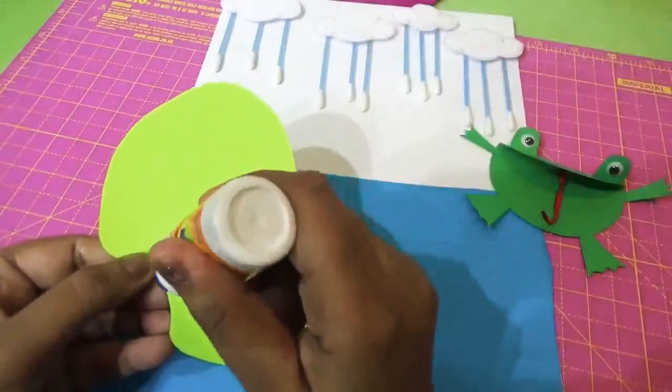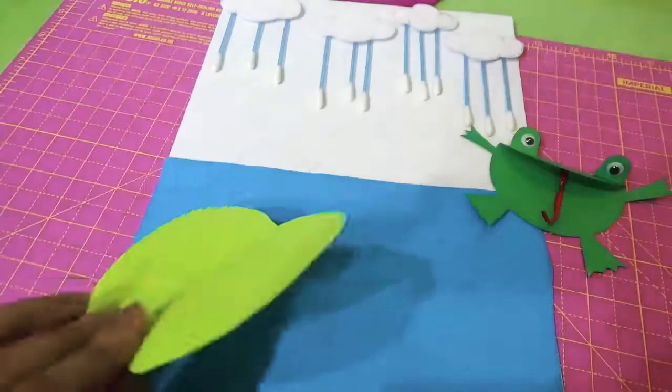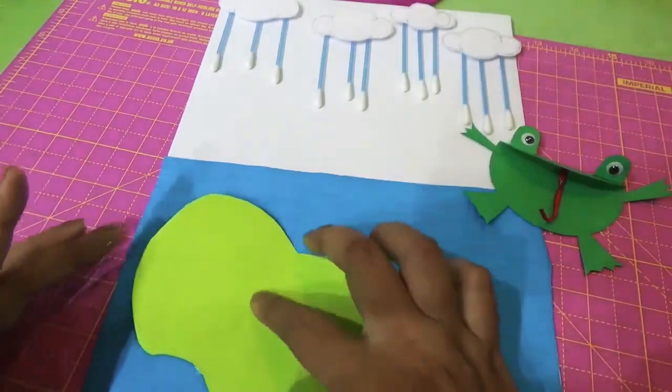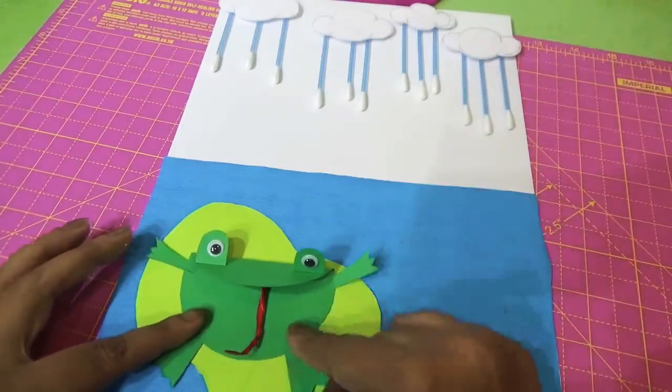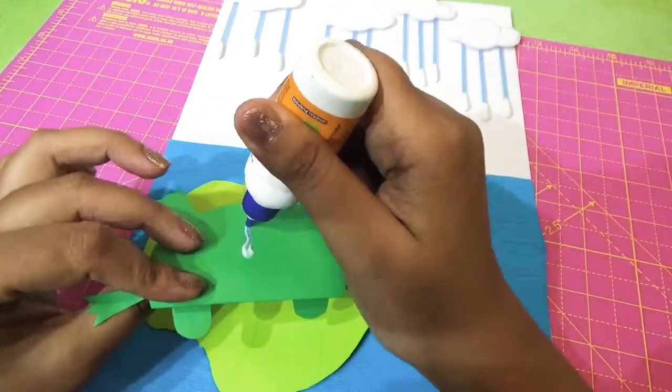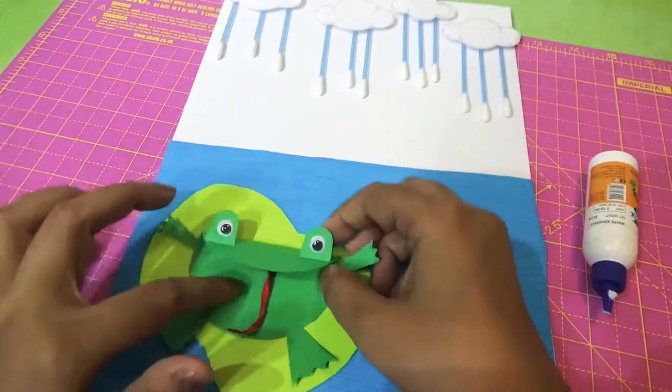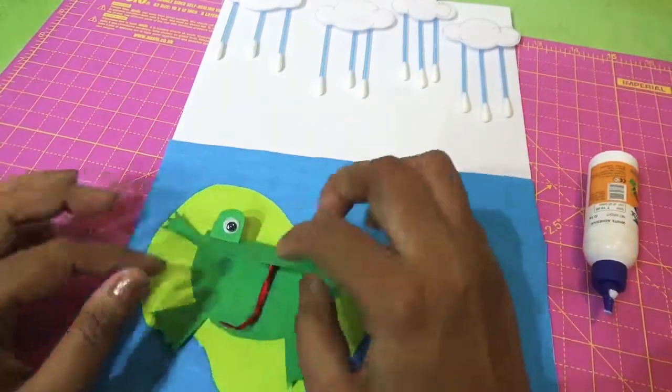Like this. Now I will put a line in the middle. I will glue and stick it near the crepe paper, and above that I will stick the frog, tilted a little bit like this.